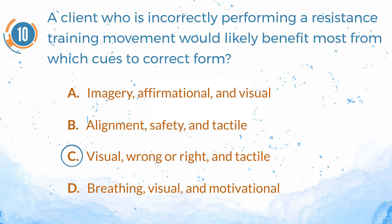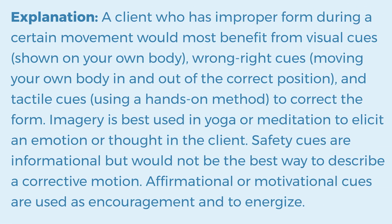The correct answer is C: visual, wrong-or-right, and tactile. A client who has improper form during a certain movement would most benefit from visual cues shown on your own body, wrong-or-right cues by moving your own body in and out of the correct position, and tactile cues using a hands-on method to correct the form. Imagery is best used in yoga or meditation. Safety cues are informational but not the best way to describe a corrective motion. Affirmational or motivational cues are used as encouragement and to energize.